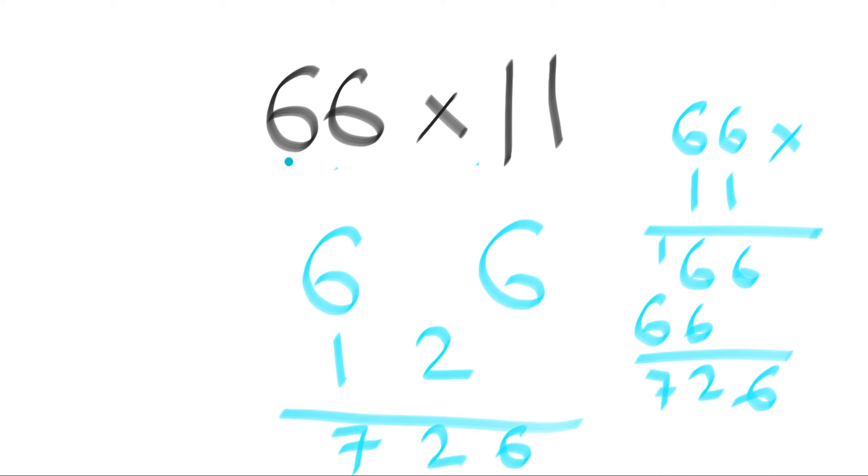That's how you do multiplication of 11, where when you add these two digits up, you get not a single digit, you get two digits. Let's try something else.